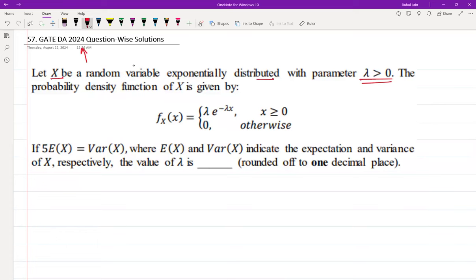The probability density function of X is given by this equation. If 5E(X) equals Var(X), where E(X) and Var(X) indicate the expectation and variance of X respectively, then the value of lambda is what? This is a NAT based question.